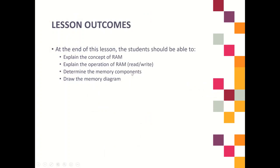This is the lesson outcomes for Chapter 9. At the end of this lesson, the student should be able to explain what is RAM and the concept of RAM, explain the operation of RAM — we have two operations: read and write — determine the memory components such as capacity of memory and number of address lines, and finally draw the memory diagram.